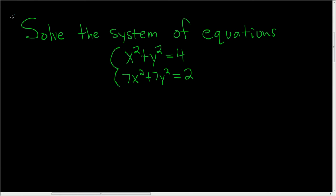Solve the system of equations: x²+y²=4 and 7x²+7y²=2. There's two ways to do this. We can do it algebraically and we can do it graphically. Let's do it both ways. First, let's try to do this algebraically.